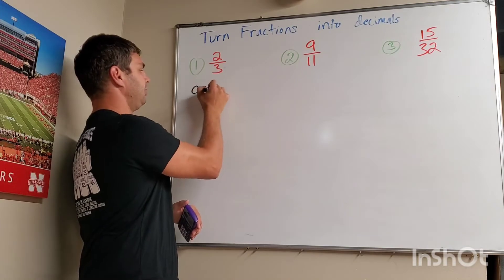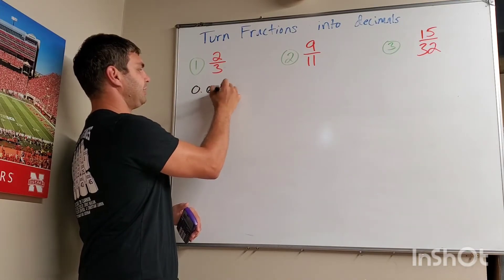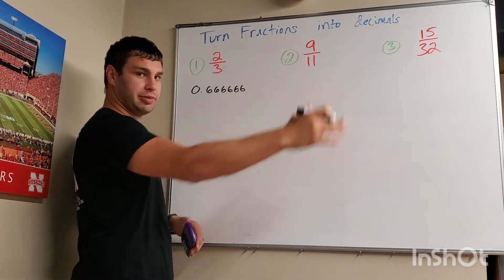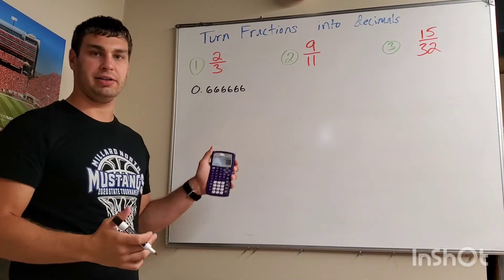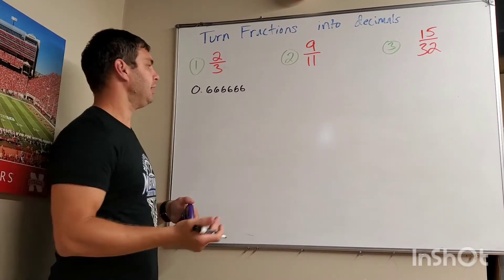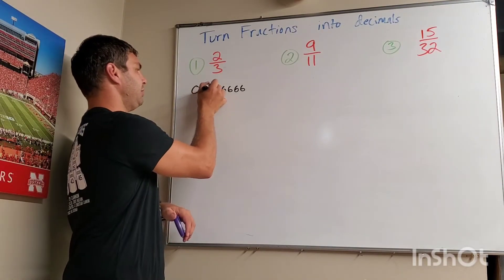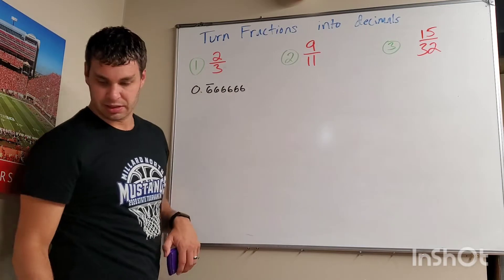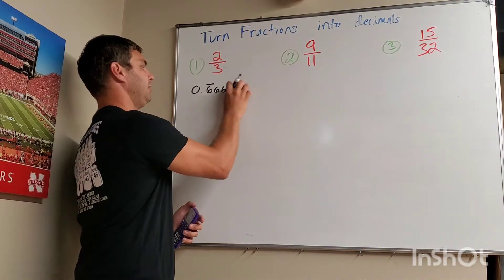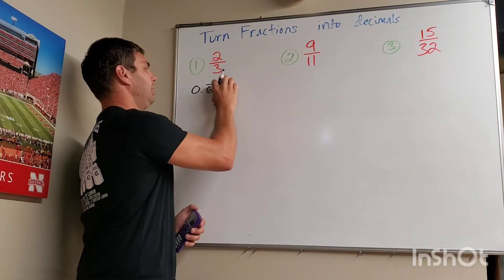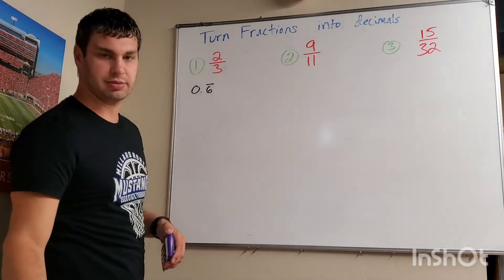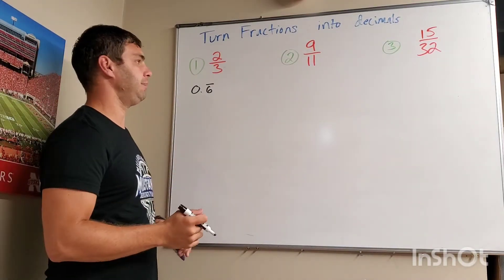For the first one, you get 0.66666 all the way through. It might say 7 at the end of your calculator, depending on what calculator you have. But what this is really saying is that it's 6 repeating, which just means we don't need to write the rest of them. We can just write 0.6 with a line over it, and that means repeating.